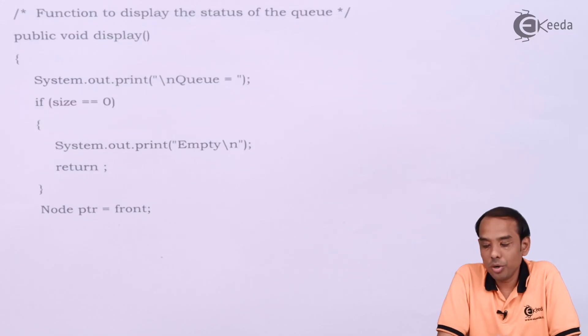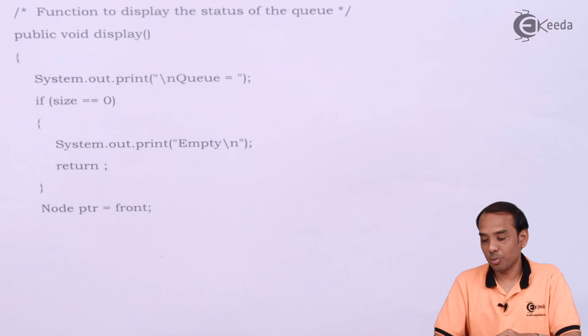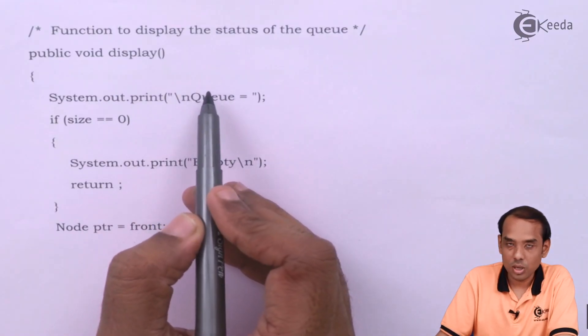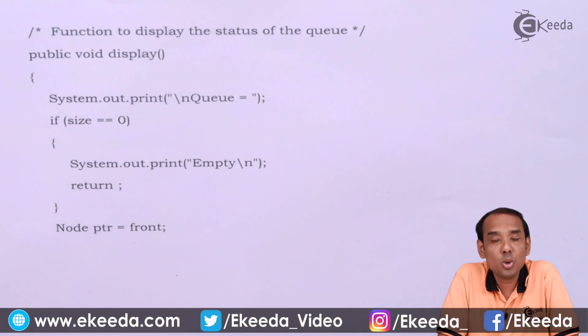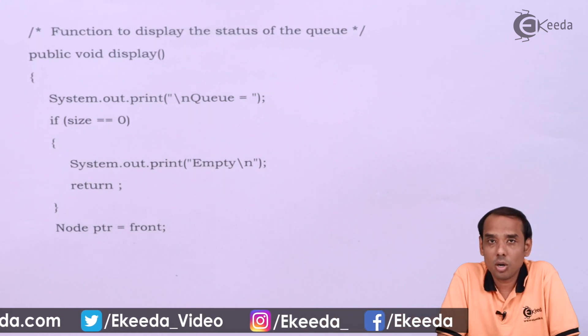In this, we are going to define a function called display. We have a queue. First I will check whether the elements are present or not. How do I know whether the elements are present or not? It depends upon the size variable. So the value of size will define whether the elements are present in the queue or not.